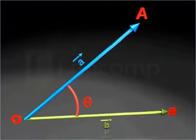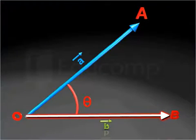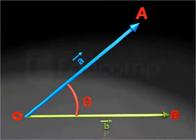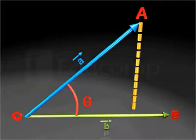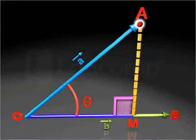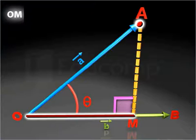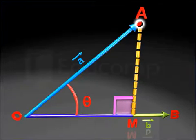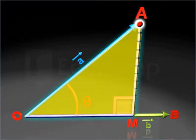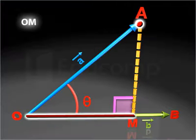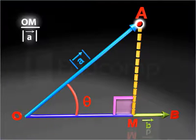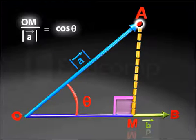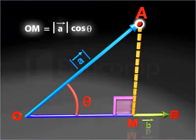The scalar product of vectors A and B can also be interpreted geometrically. If a perpendicular is drawn from the end point of vector A onto vector B, then OM represents the orthogonal projection of vector A on vector B. Now, consider the right triangle OAM. The ratio of the base to the hypotenuse — that is, the magnitude of vector A — is equal to cos theta. This equality helps us to deduce that the base of this right triangle is the magnitude of vector A times cos theta.